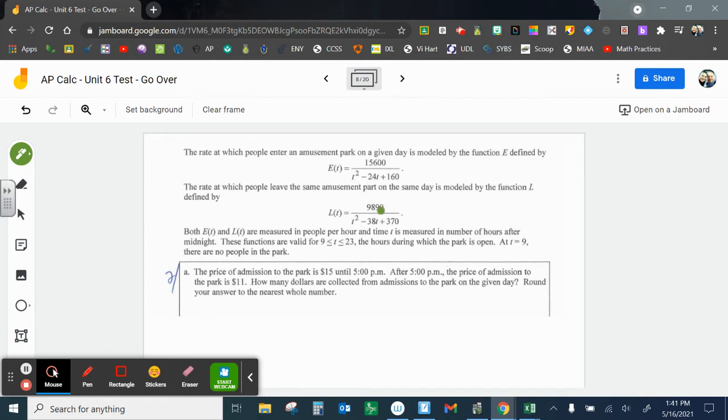Let's take a look at this problem. So the rate at which people enter an amusement park is modeled by a function E, defined by E(T). So that's enter. And again, a complex function, not something you can do in your head. We have access to the calculator when people leave the amusement park, that's L(T). Both E(T) and L(T) are measured in people per hour. And time is measured number of hours after midnight. That's important. So that's 9 a.m. is nine hours after midnight. 23 is 23 hours after midnight, which is 11 p.m. At time equals nine, there are no people in the park. So we start with zero people. That's the initial amount.